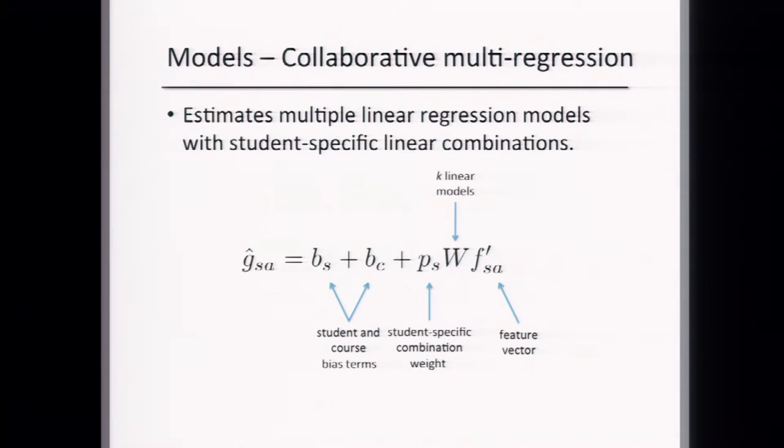Mathematically, the estimated grade G subscript SA equals two constant terms PS plus BC — the student bias and the course bias. These measure, for instance, how well the student performs overall and a constant term tied to the course (easy versus hard). Plus a feature vector — same as before — where W is now a matrix whose columns correspond to the different linear regression models. PS is a student-specific weight vector that combines the output of those different regressors.